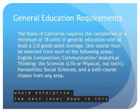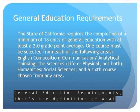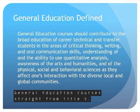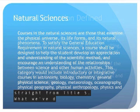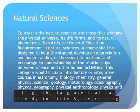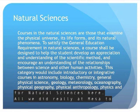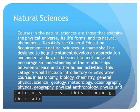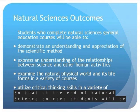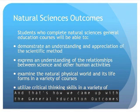The next level down in this educational cosmology are general education outcomes and general education requirements — that's the definition of what general education means in the state of California. This is the definition of general education courses straight from Title V. What we did at Mesa was basically take the language already in Title V describing the different categories of general education and turn them into outcome language. So at the end of natural science courses, students will be able to do these three or four things. That's how we came up with the general education outcomes for the four categories.